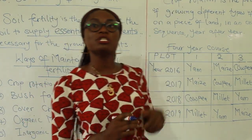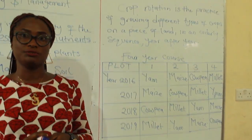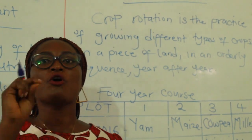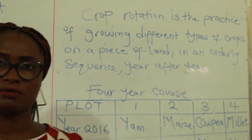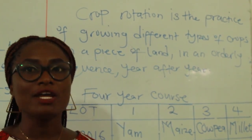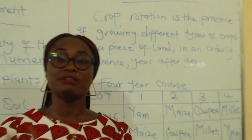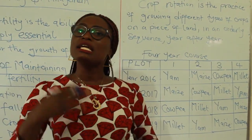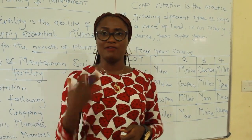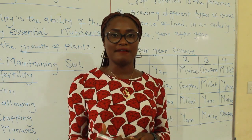We'll be taking the first one, which is crop rotation. What is crop rotation? Crop rotation is the practice of growing different types of crops on a piece of land in an orderly sequence, year after year.